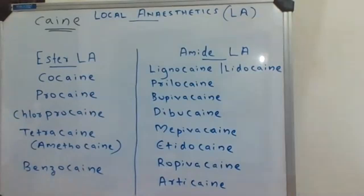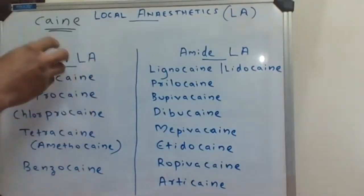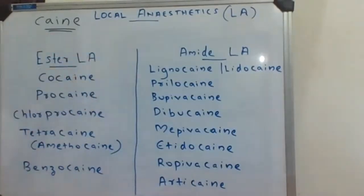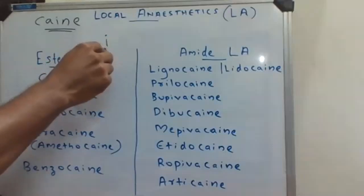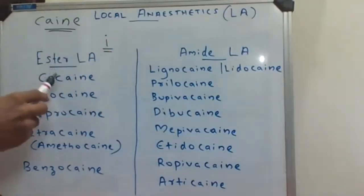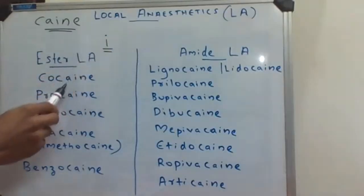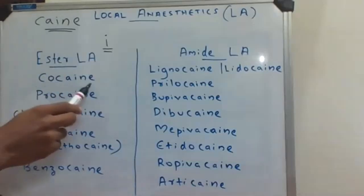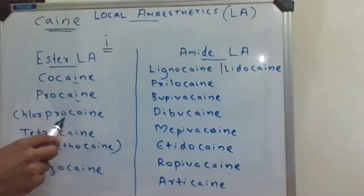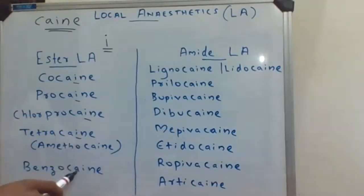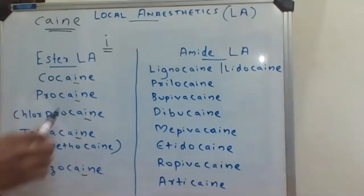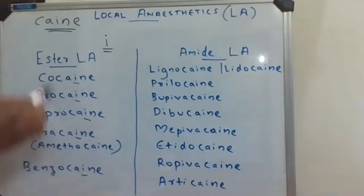Now, how to remember which drug belongs to which category? Here is a shortcut: if there is only one 'I' in the name of the drug, it is an ester local anesthetic. You can see here — cocaine contains only one I, procaine has one I, chlorprocaine only one I, tetracaine one I, benzocaine only one I. So if there is only one I in the name, it belongs to the ester local anesthetic category.